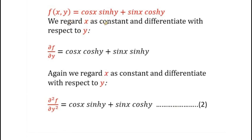Now we regard x as constant — that is, cos(x) is a constant and sin(x) is a constant — and differentiate with respect to y. So, partial f by partial y: cos(x) remains as it is, derivative of sinh(y) is cosh(y); plus sin(x) remains as it is, derivative of cosh(y) is sinh(y).